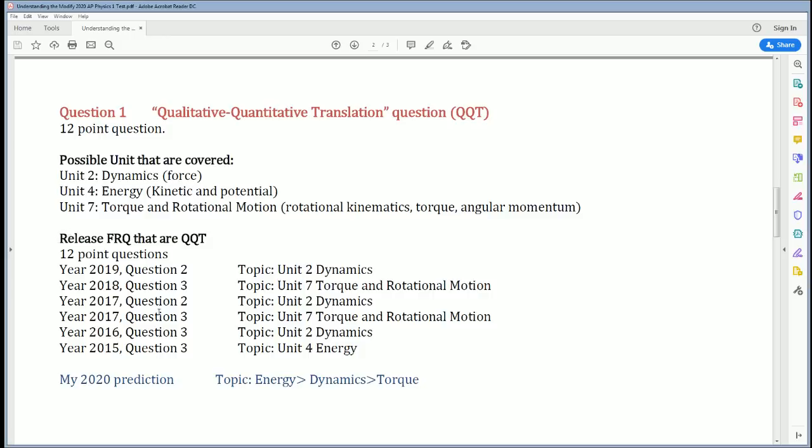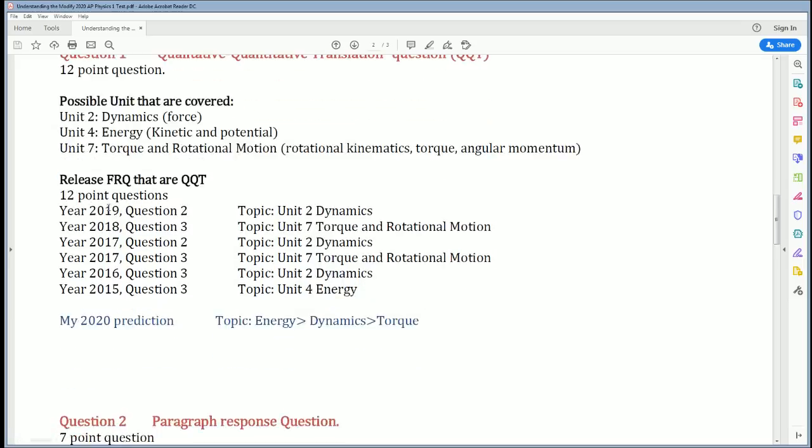This is the history of the QQT questions that have been released since the test was recreated. In 2019, it was Question 2, on dynamics. In 2018, it was Question 3, on Unit 7, torque. In 2017, it was Question 2, covering Unit 2, dynamics. Also in 2017, Question 3 covered Unit 7, torque and rotational motion. In 2016, it was Question 3, Unit 2, dynamics. And in 2015, Question 3 was on energy.